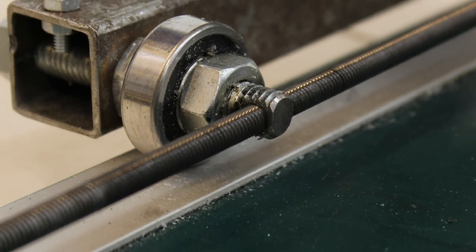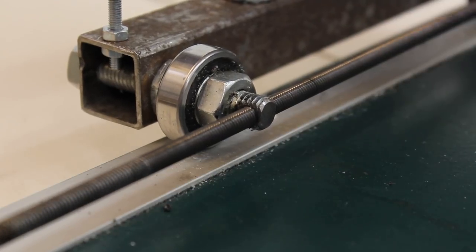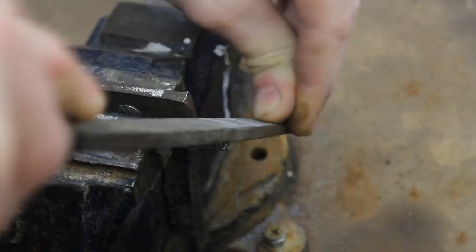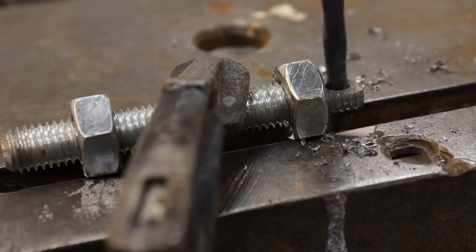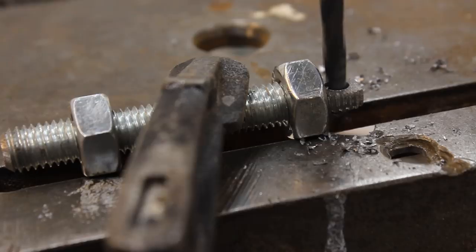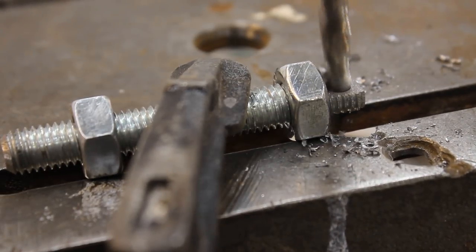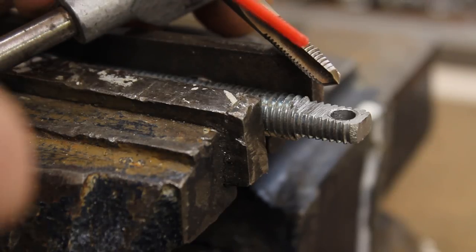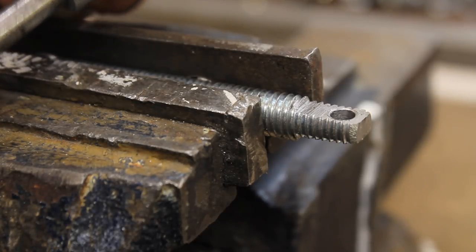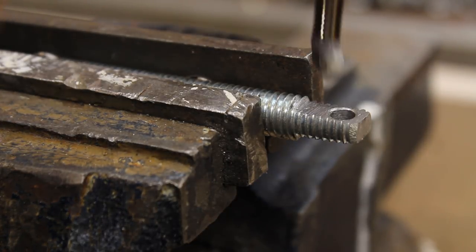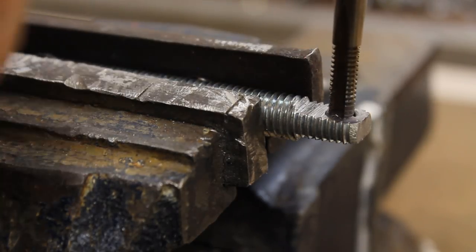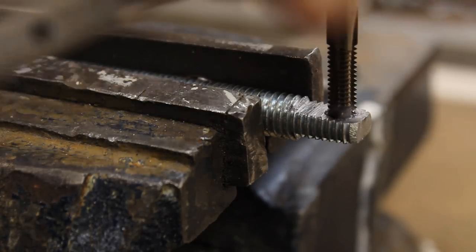The axes are driven through 6mm threaded bars. We need some 10mm bolts with a 6mm thread at one end. To get that, the 10mm bolt has to be filed flat on two opposite sides. Now a 5mm hole is drilled. Counterbore the hole with a 6mm drill. The thread is cut next using three taps. The first cut is done with a bottoming tap, usually marked with one ring at the shaft.